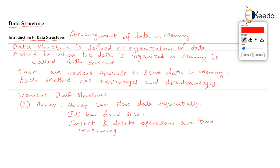Throughout this subject, data structures, we are going to address only one question: how to store data? Each time I start a new video, I will start by saying 'let us store data.' In the first video, I will store data in a linked list. In the second video, in a binary tree, or in the third video, in a multi-way tree. All these — linked list, array, multi-way tree, binary tree — are nothing but data structures. In short, anything which stores data is called a data structure.